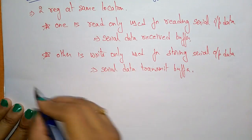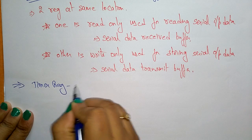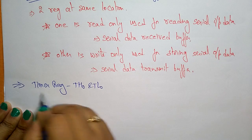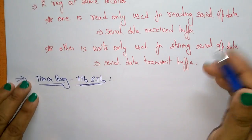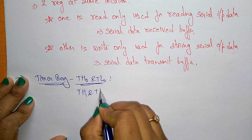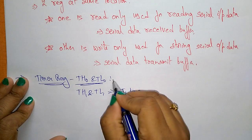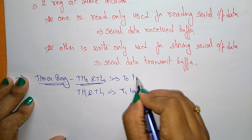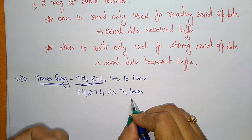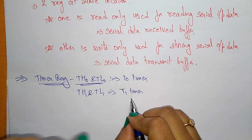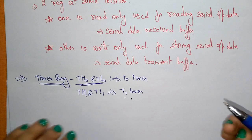The next special function registers are the timer registers: TH0 and TL0 for Timer 0, and TH1 and TL1 for Timer 1. TH is the higher-order byte and TL is the lower-order byte. These are the high and low order bytes of the 16-bit counting registers for Timer/Counter T0 and Timer/Counter T1.